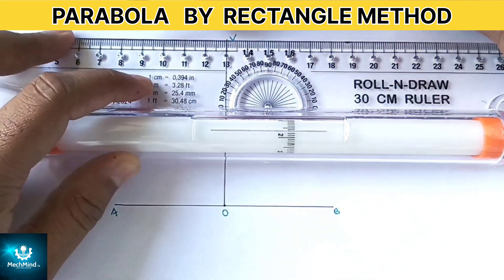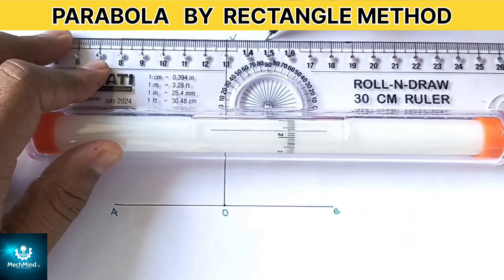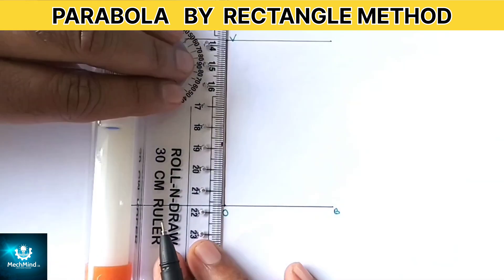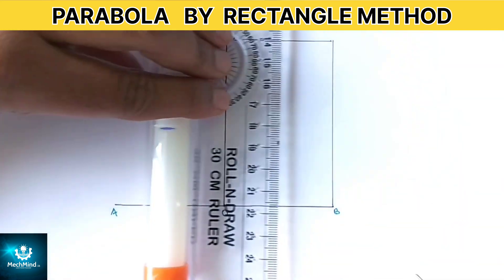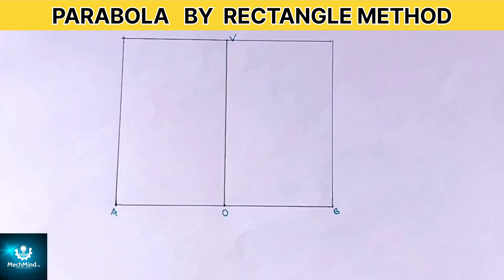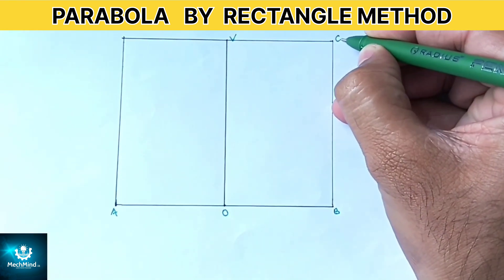Now complete the rectangle where AB equals 100 mm and OV equals 80 mm. Rectangle ABCD. This rectangle is the basic frame in which we will construct our parabola.